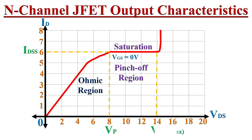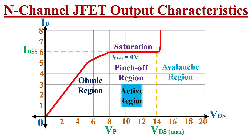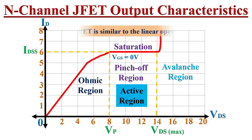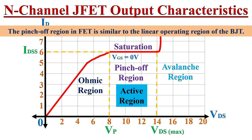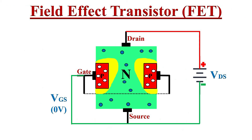Generally in data sheets, the maximum value of VDS is defined. This region is known as the avalanche region, and during operation the value of VDS should be less than this maximum value. The pinch-off region is also called the active region of the JFET. The pinch-off region in JFET is very similar to the linear operating region of the bipolar junction transistor.